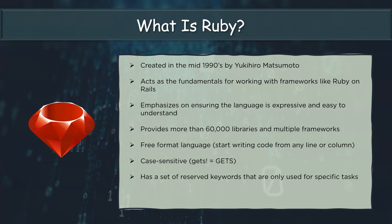It also has a set of reserved keywords that are only used for specific tasks, and it's a dynamic programming language. Ruby, like Java and Python, includes exception management tools. It has a real mark and sweep garbage collector, Ruby has settings that are OS independent, and it's exceptionally portable.